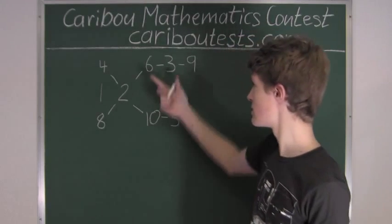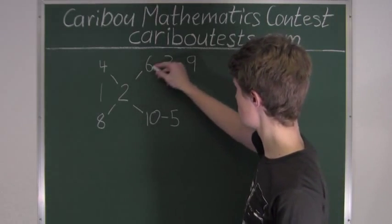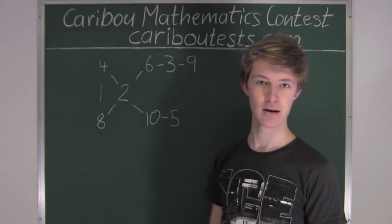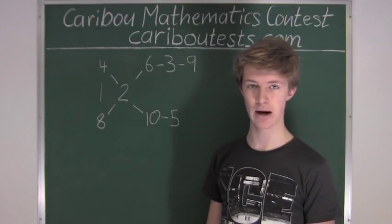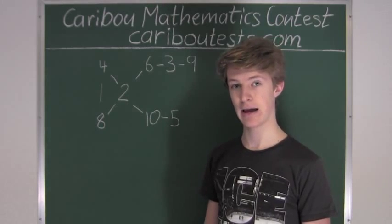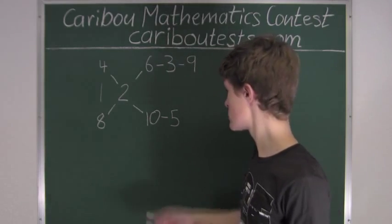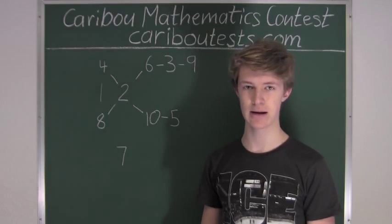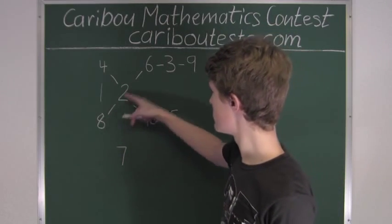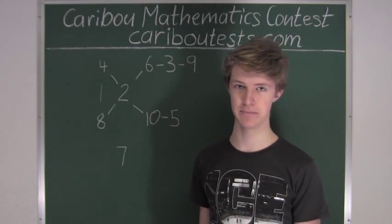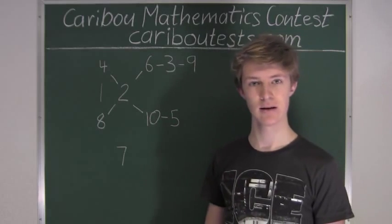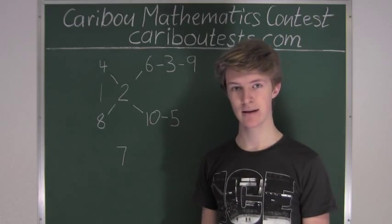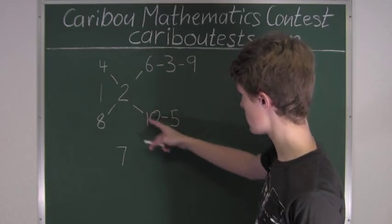Now the next number is 6. 6 has two factors which are 2 and 3, and it's already linked to both of them. It has no multiples because they would be greater than 10. Next is 7, which is also a prime number — it has no factors, and any multiples would be greater than 10, so we write 7 separately. 8 has two factors, 2 and 4, and it's already linked to both. 9 just has factor 3, and it's already linked to that 3. Finally, 10 has two factors, 2 and 5, which it's already linked to both.